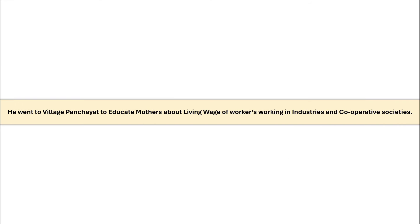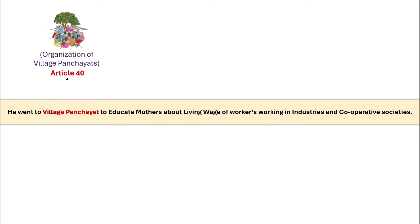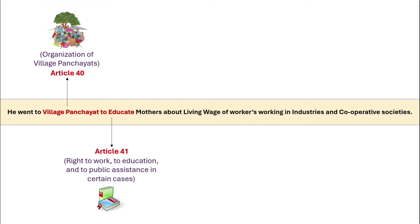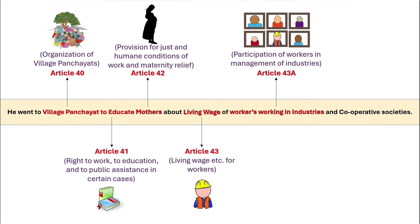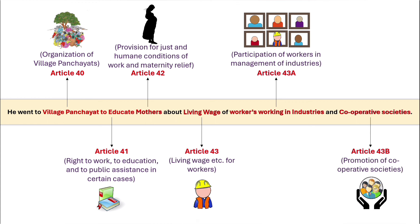The next statement of our story is: he went to the village panchayat to educate mothers about the living wage of workers working in industries and cooperative societies. 'Village panchayat' denotes Article 40 — organization of village panchayats. 'To educate' denotes Article 41 — right to work, to education, and to public assistance in certain cases. 'Mothers' denote maternity relief, i.e. Article 42 — provision for just and humane conditions of work and maternity relief. 'Living wage' denotes Article 43 — living wage etc. for workers. 'Workers working in industries' denotes Article 43A — participation of workers in management of industries. And 'cooperative societies' denotes Article 43B — promotion of cooperative societies. This statement covered six articles: 40, 41, 42, 43, 43A, and 43B.